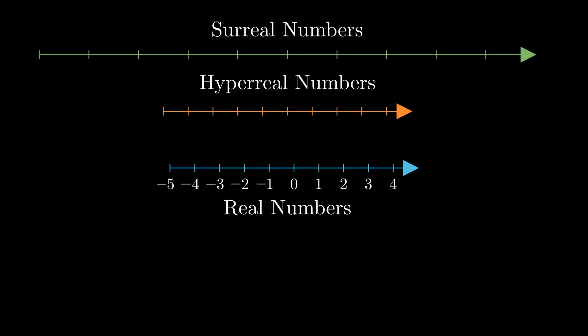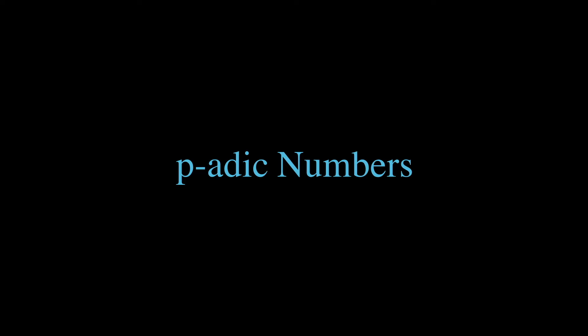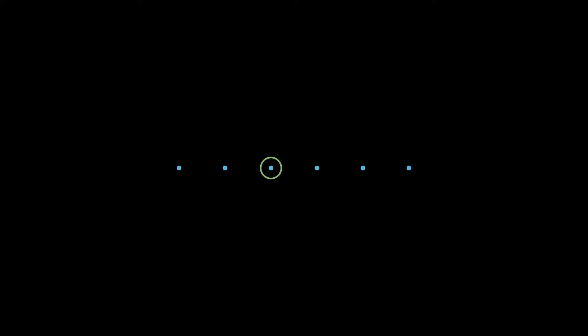And while these surreal numbers may seem far removed from everyday experience, they do offer some insights into mathematical structures and relationships that aren't readily apparent in more familiar number systems. Yet, there are other numbers as well. The so-called p-adic numbers are a concept that also seem quite counterintuitive. These numbers, unlike real and complex numbers, are rooted in our geometric intuition.